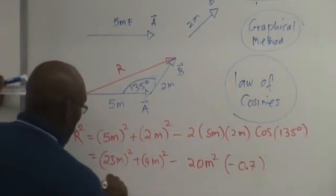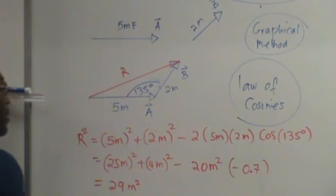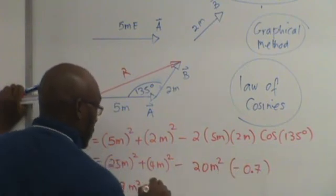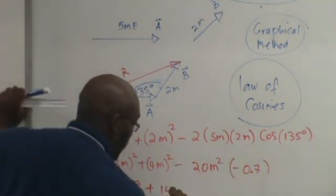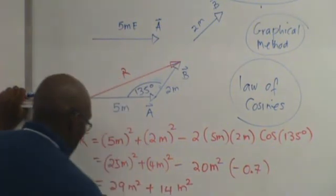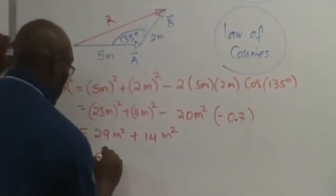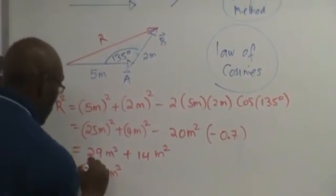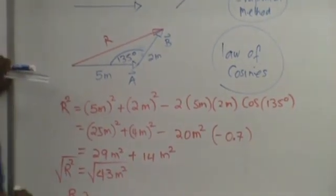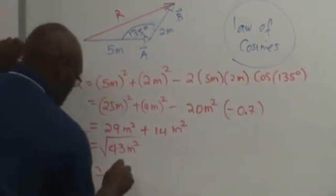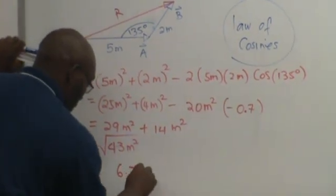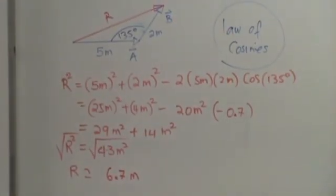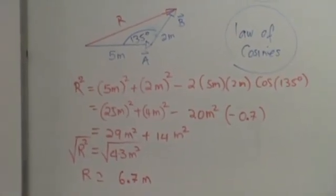This gives us 29 square minus, minus times minus equals plus, 14 square, which is 43 meters square. Take the square root of both sides, R is approximately 6.6 meters. I'm just approximating, I don't have my calculator. So that's your answer.